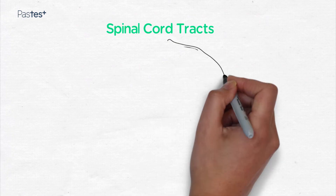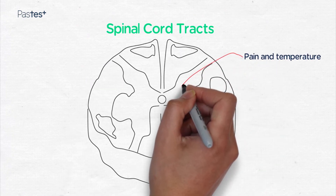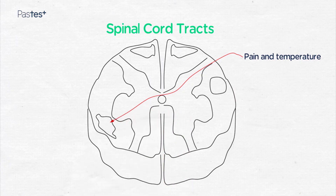The first tract we're going to think about is to do with pain and temperature perception. This is felt in the skin and the impulses are carried by small unmyelinated nerves to the spinal cord where almost immediately they decussate and then ascend in the spinothalamic tract.